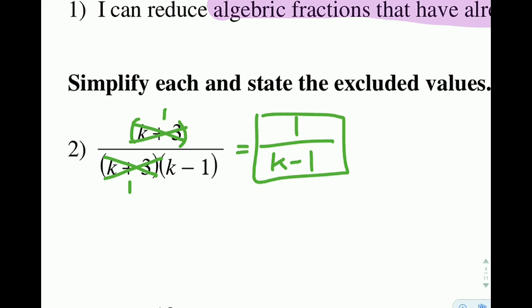Now we're also asked to state the excluded values. The excluded values are the values that would make this problem not work. If we look at our final answer here, we would say, if we plugged a 1 in for k, that would cause problems because then we'd have a 0 in the denominator. But you don't look at the simplified one to decide what are all your excluded values.